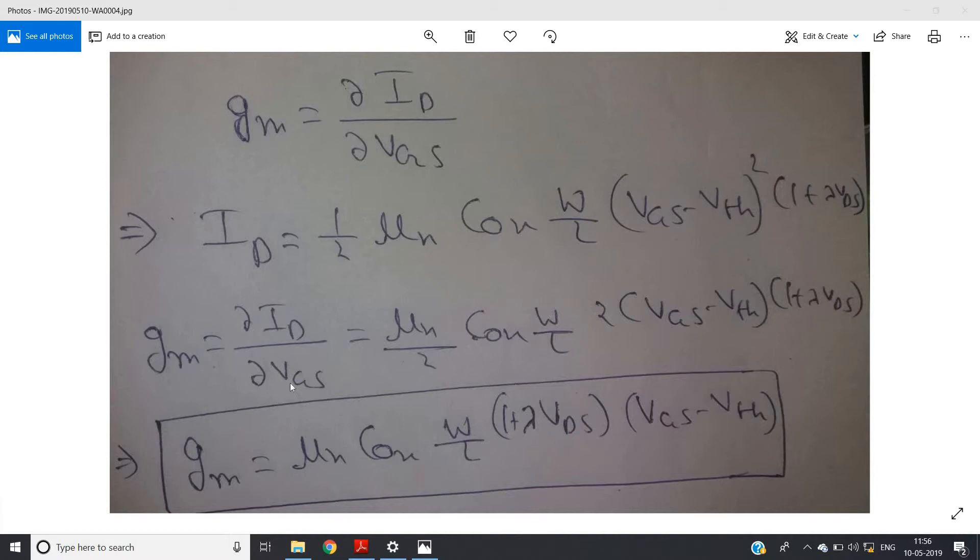Now gm is nothing but ∂ID/∂VGS. That is nothing but μn × Cox × (W/L) will remain as it is because these are constants. This 1/2 will also be the same, so (1/2) × μn × Cox × (W/L). Then the derivative of (VGS - Vth)² is 2(VGS - Vth).